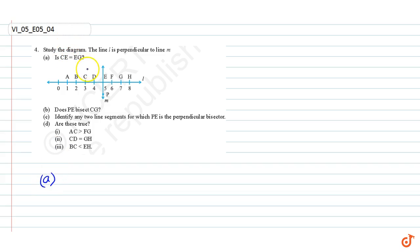Is CG equal to EG? We know that CG = 5 - 3 = 2, and EG = 7 - 5 = 2. Therefore CG = EG. The answer is yes.